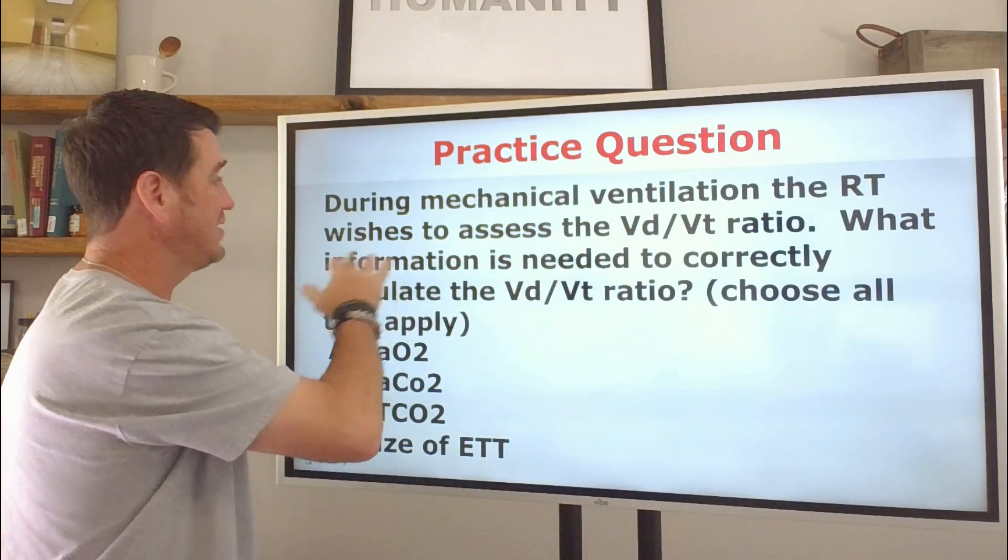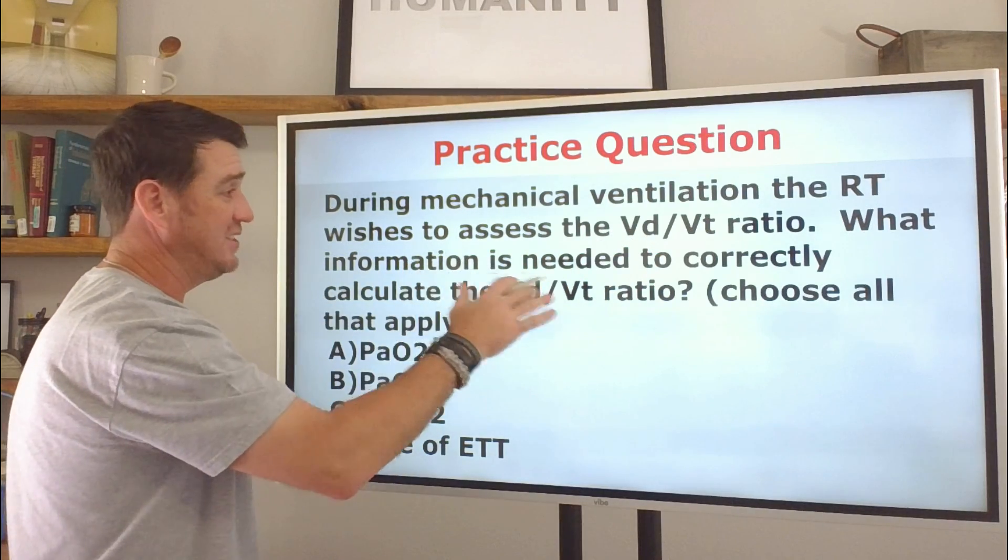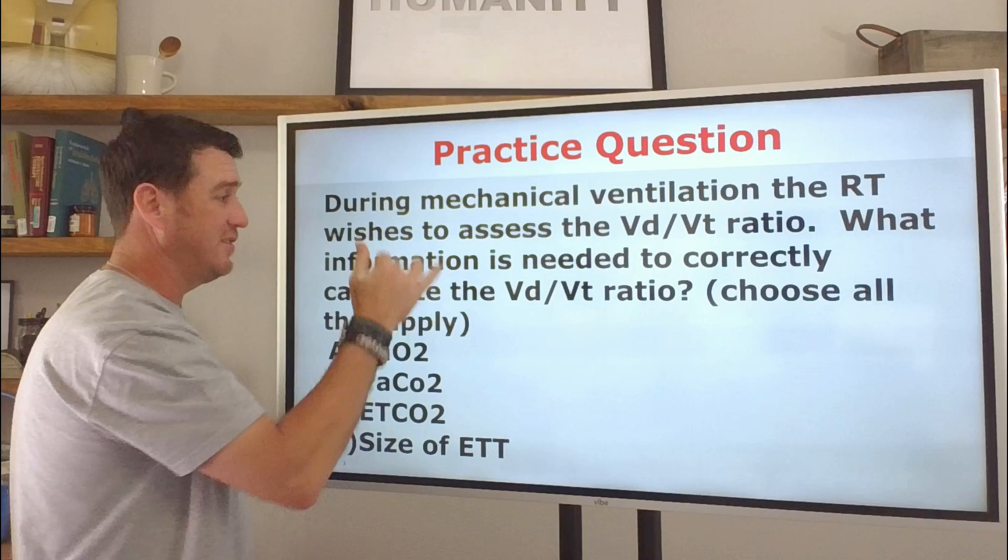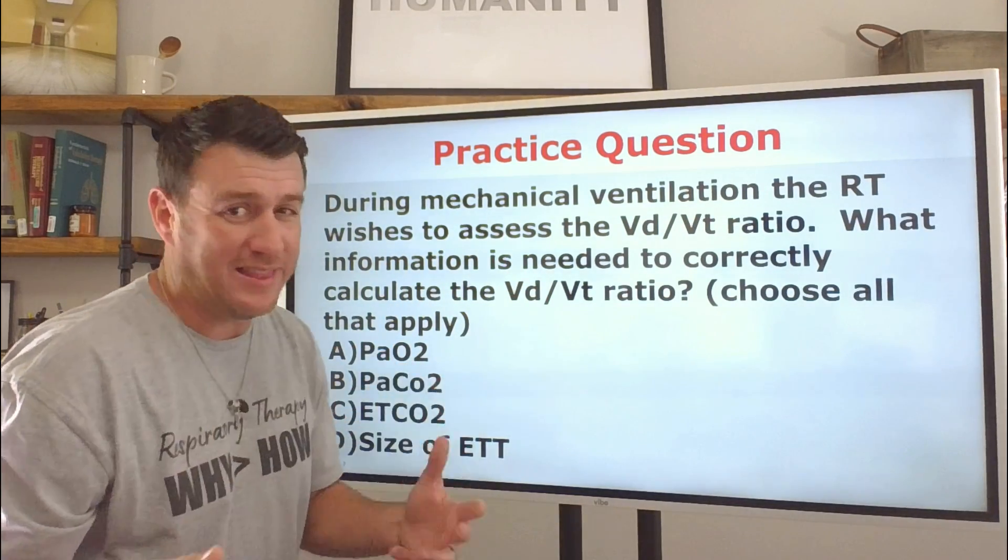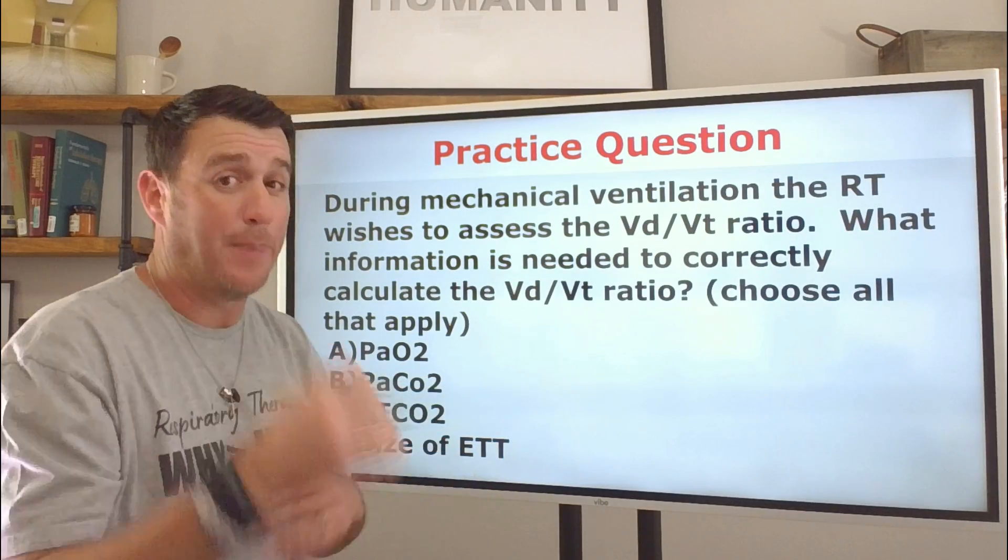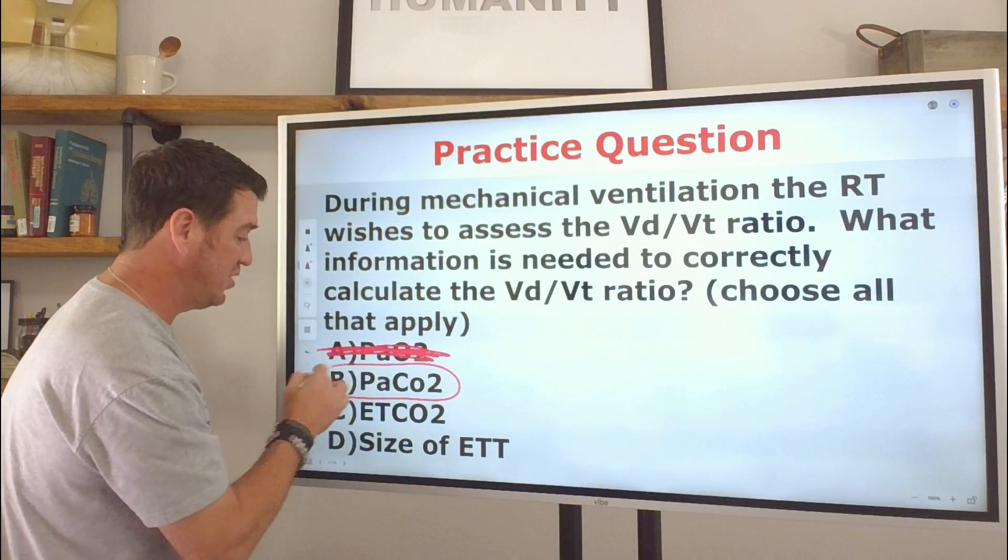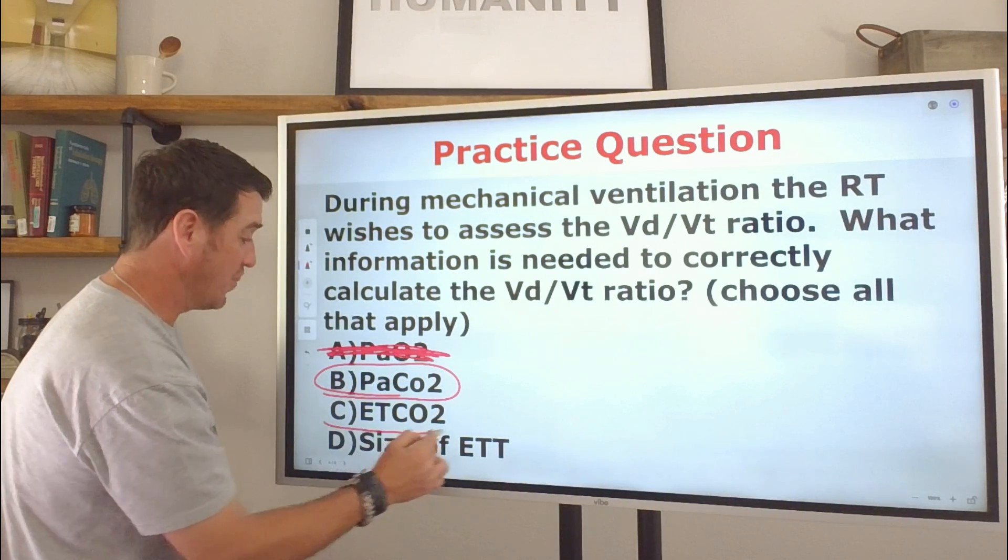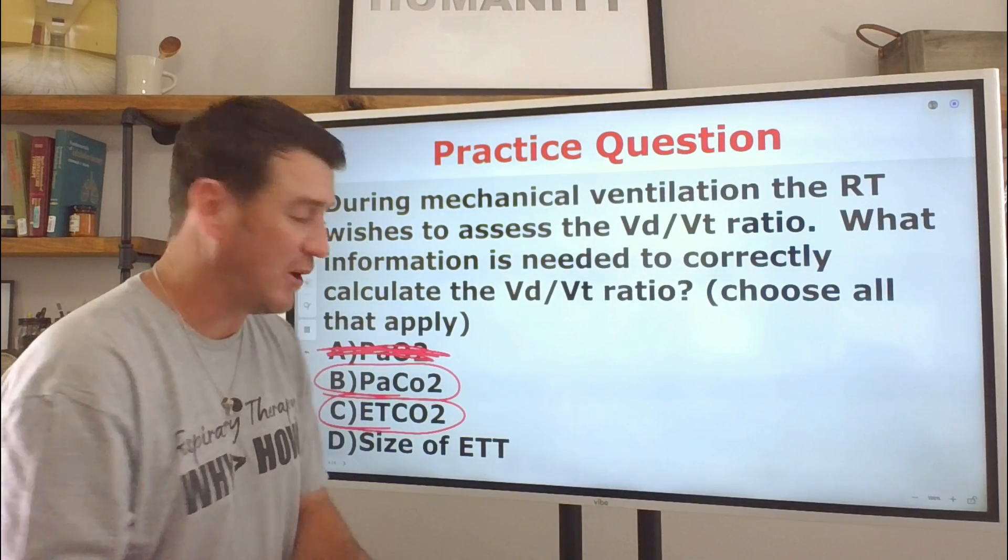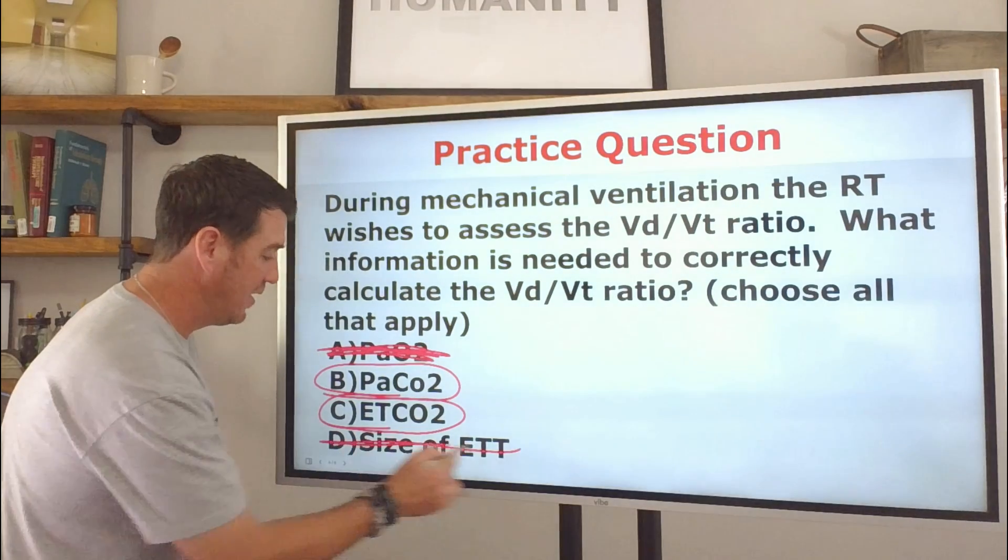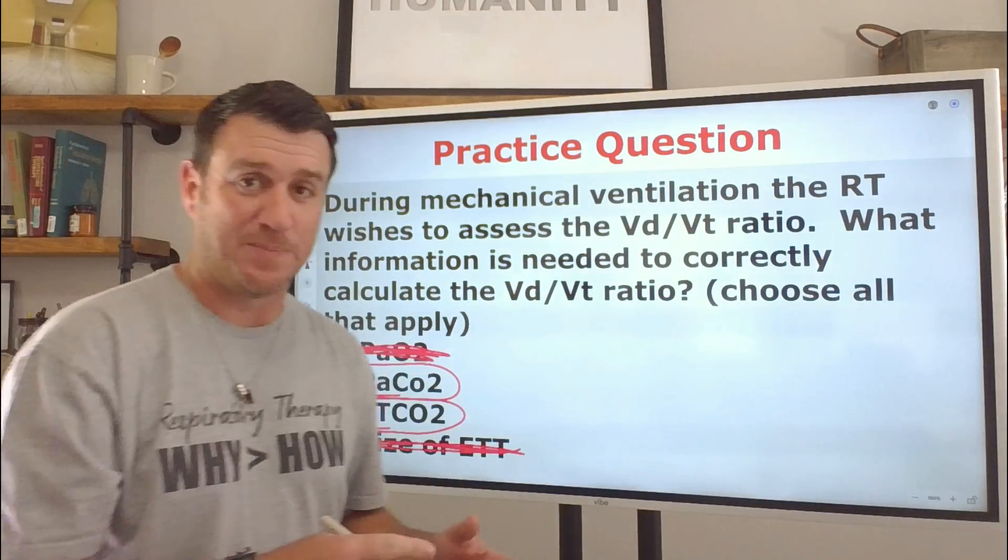There's going to be lots of questions where they don't give you end tidal CO2. It's not a VD to VT question. But when they give it to you, you got to understand this is the time I need to know PaCO, PetCO, PaCO, because I'm probably going to have to figure out what my effective tidal volume is. Now remember, when you do this formula, the percentage you get is the ineffective amount. So if 57% is ineffective, then 43% is effective. And so keep that in mind. That's what this formula tells you.